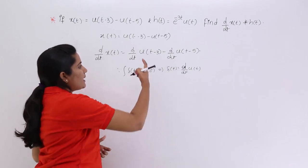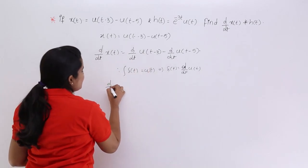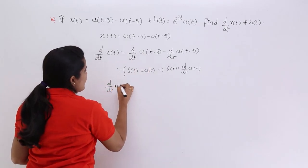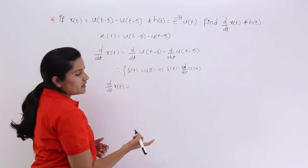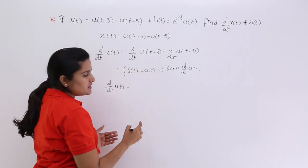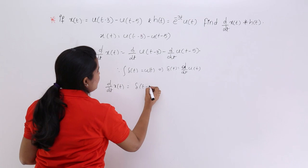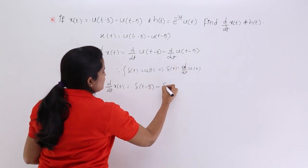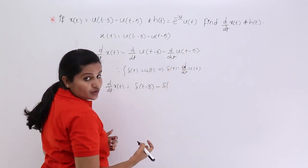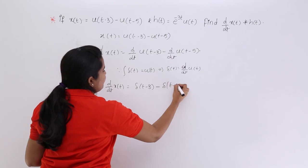By this relation, d/dt of x(t) becomes d/dt of u(t-3) minus d/dt of u(t-5), which equals the shifted impulse δ(t-3) minus δ(t-5).